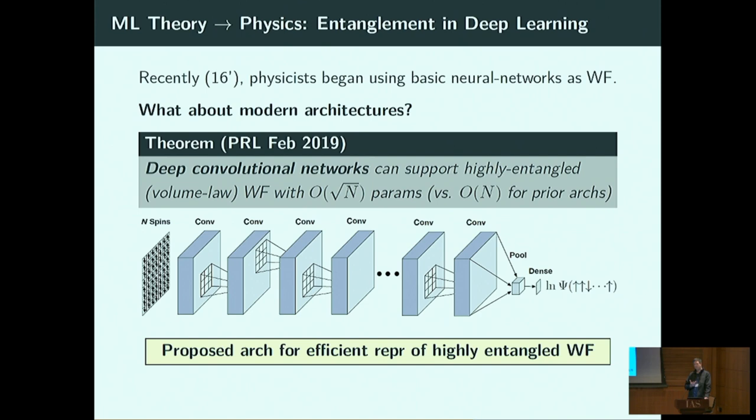The next question was: can we take our machine learning results and derive new results for physics? Just a few years ago physicists began using neural networks — specifically shallow fully-connected networks — as alternative approximation methods for wave functions. We wondered if there's any benefit to using modern deep architectures.